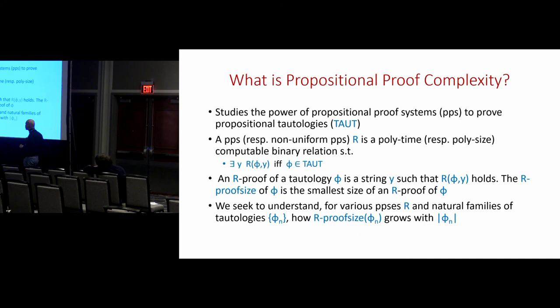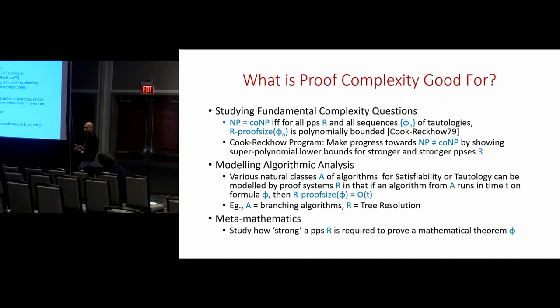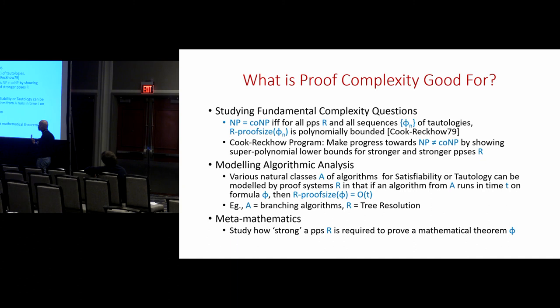That in a nutshell is propositional proof complexity, but what's the point of it? There are at least three things it's good for, and all of them will be relevant to this talk. The first is that it's useful for studying the fundamental complexity question of whether NP equals co-NP. Cook and Reckhow showed that NP equals co-NP if and only if there exists a propositional proof system R such that for all sequences of tautologies the proof size in R is polynomially bounded.